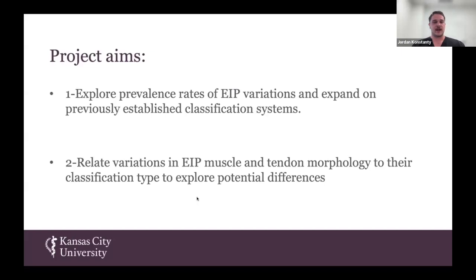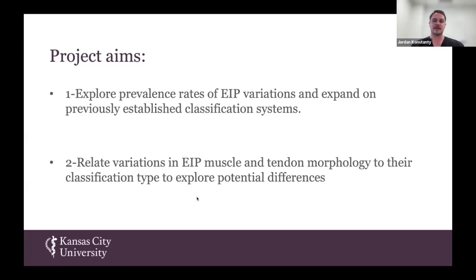So what were we trying to accomplish with this study? The project aimed to explore the variations of the extensor indices and look at their individual prevalence. We also wanted to see how these different classifications affect the morphology of the muscles and tendons themselves.